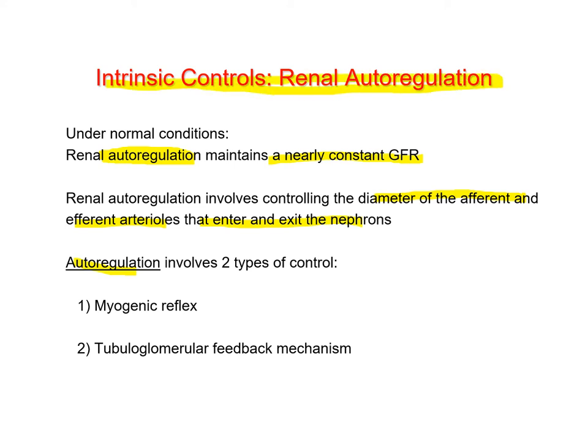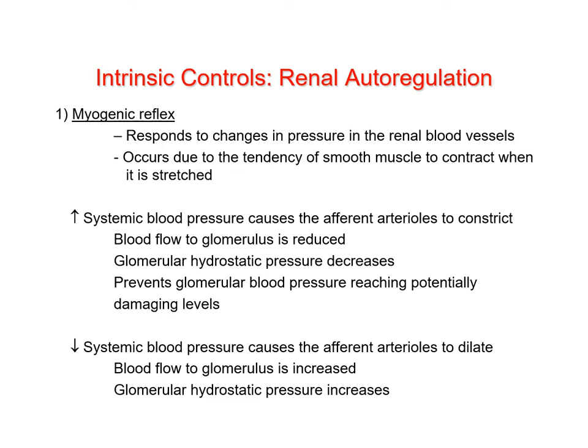Renal autoregulation involves two types of intrinsic controls: myogenic and tubuloglomerular feedback. The myogenic mechanism involves a response to changes in pressure in renal blood vessels. It occurs largely because of smooth muscle's built-in tendency to contract when stretched — a response also seen in the gut as food moves along and stretches the intestinal wall.